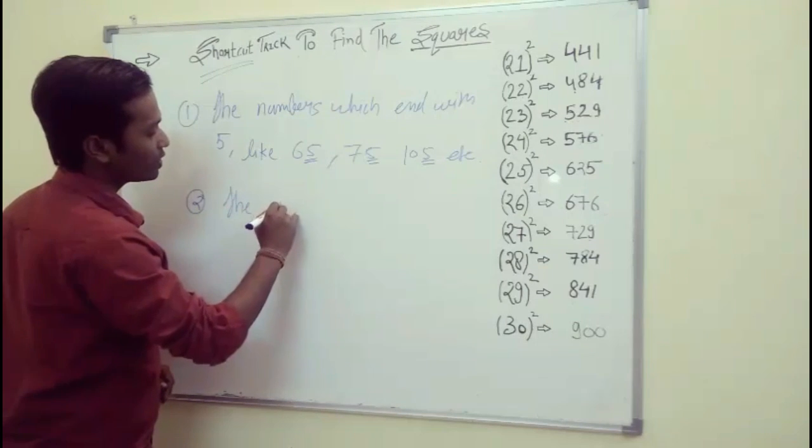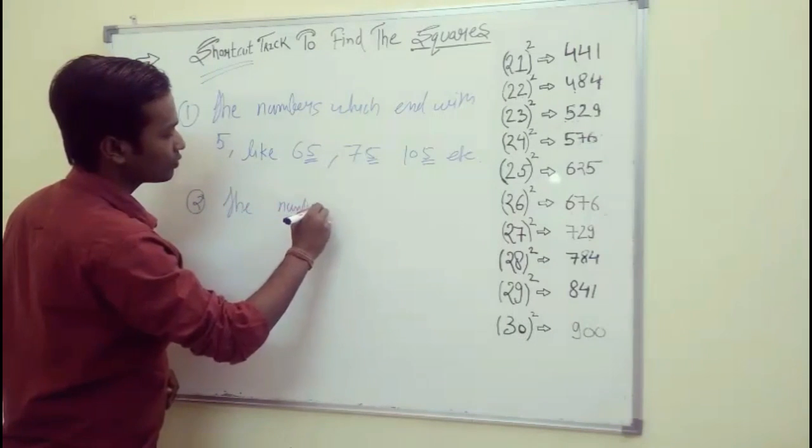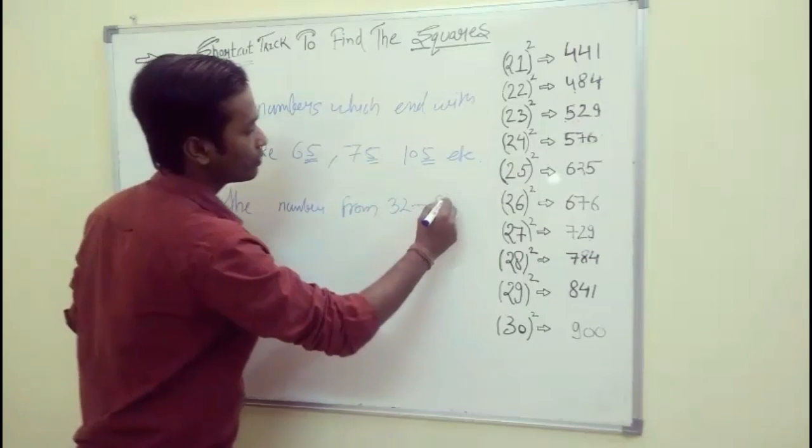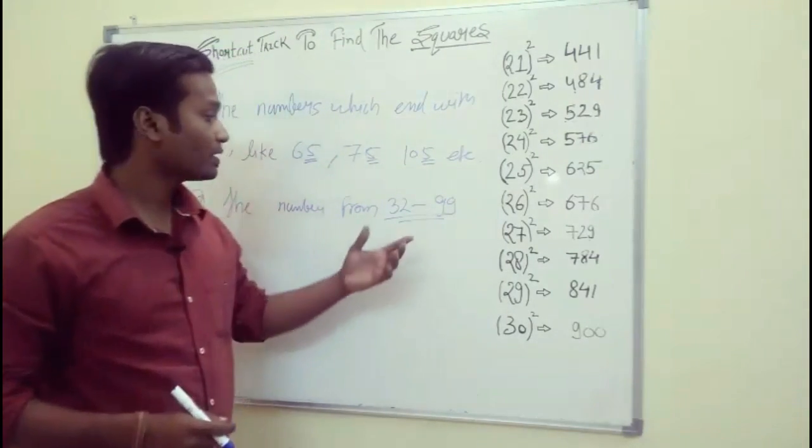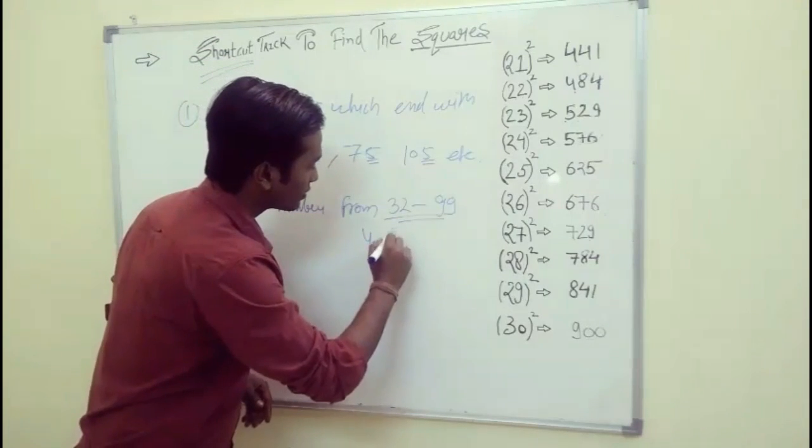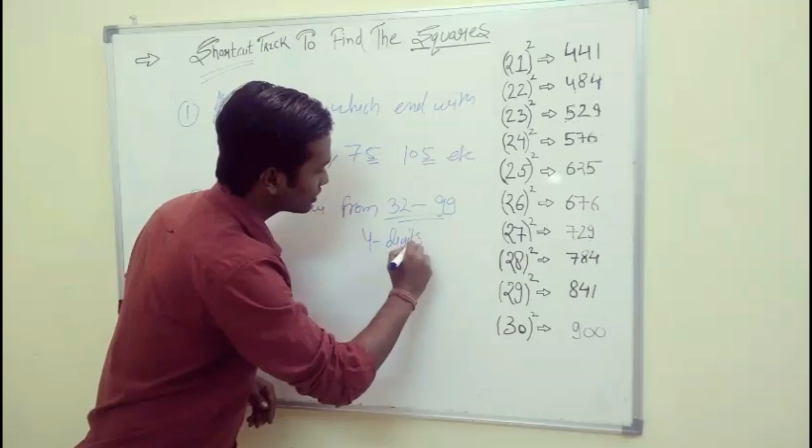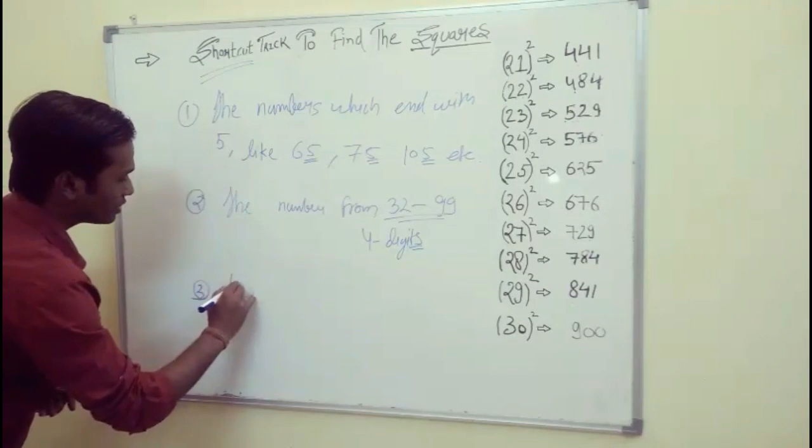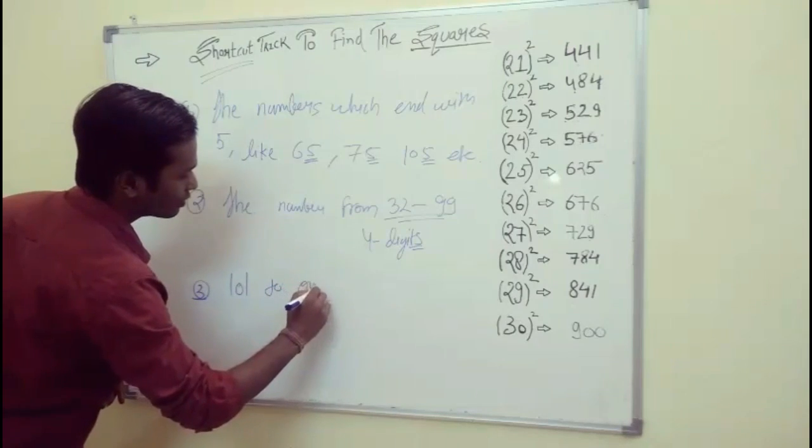Second, those numbers from 32 to 99. Guys, always remember that the square of 32 to 99 always comes in 4 digits. Our answer always comes in 4 digits between these two numbers. And the last one is 101 to onward.